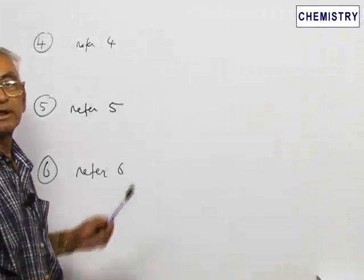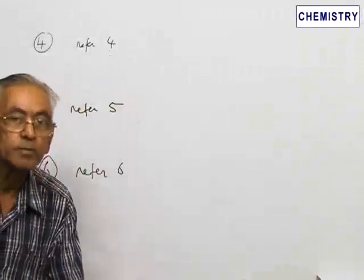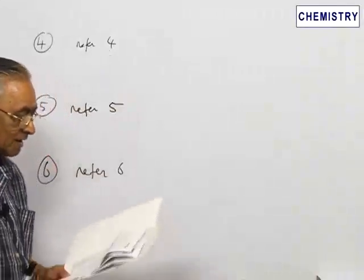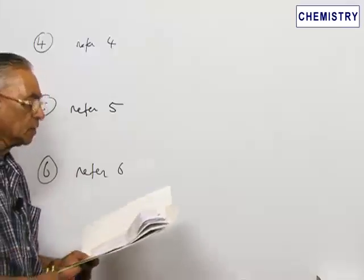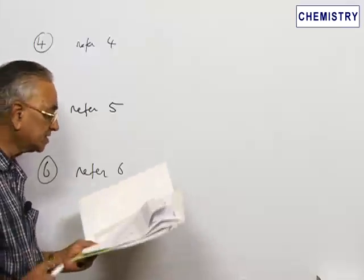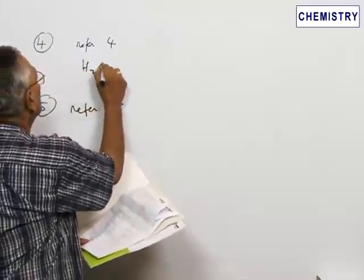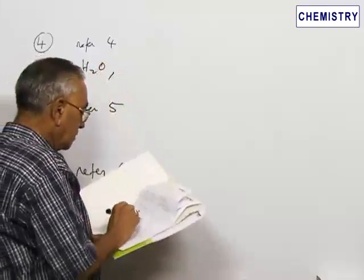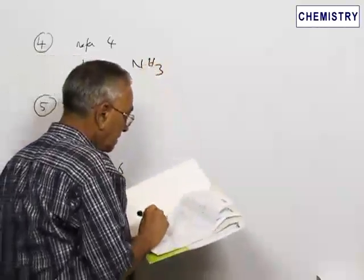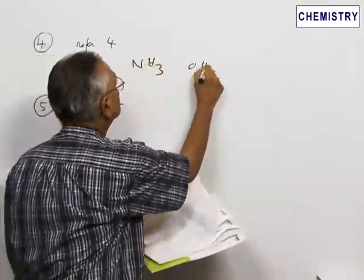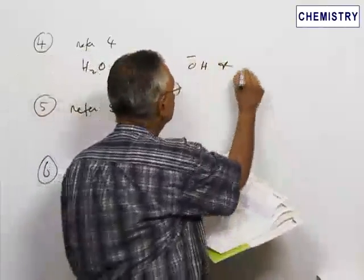Let us now go to question number 4. The question says: which among the following is a nucleophile? The four species given are H₂O, NH₃, OH⁻, and BH₃.